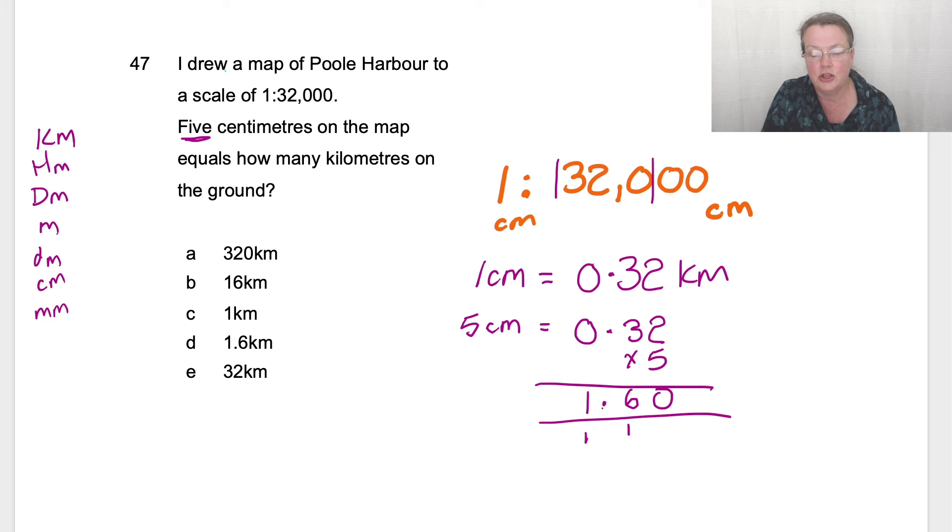Now let's just imagine we'll change the decimal so we can practice it. Supposing it was 0.032 times 0.5. How many numbers are there after the decimal now? One, two, three, four.